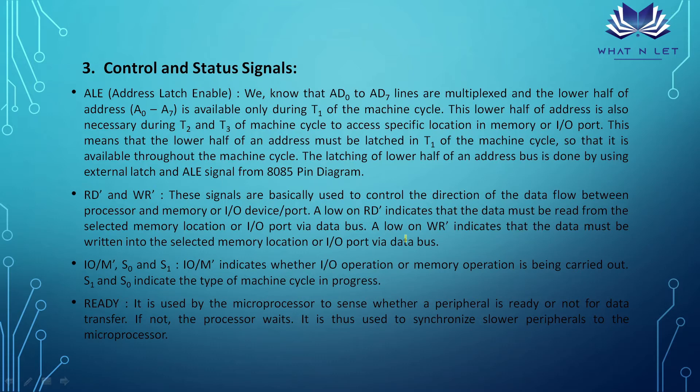An important control and status signal is ALE — Address Latch Enable. It is a positive outgoing pulse that indicates when the time-multiplexed address-data bus is behaving as an address bus versus a data bus. During the T1 portion of the machine cycle, a positive pulse on ALE indicates that the low-order address is present on AD0–AD7. If ALE is 1, address is traveling; if ALE is 0, it is data.